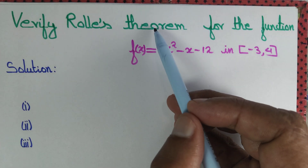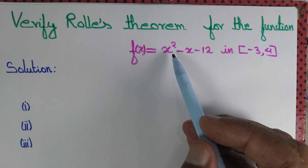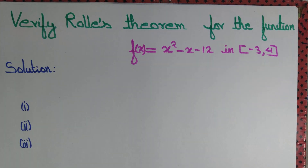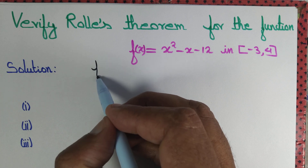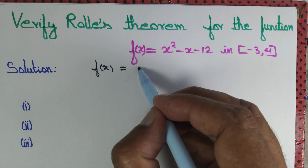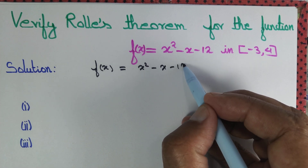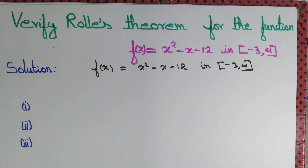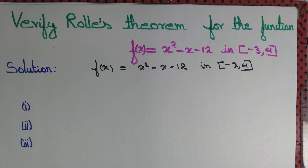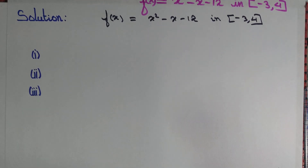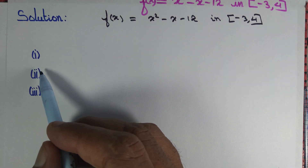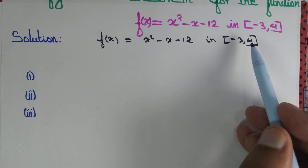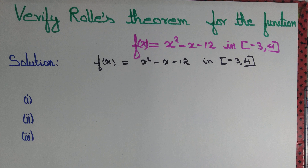Let us verify Rolle's theorem for the function f(x) = x² - x - 12 in the interval [-3, 4]. To verify Rolle's theorem, we need to make sure that three criteria are satisfied: number one, f has to be continuous; number two, f has to be differentiable; number three, the value of the function at the endpoints must be equal. Let us do them one by one.